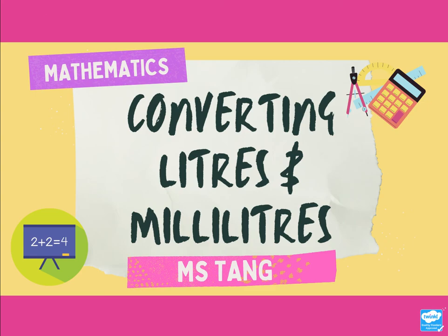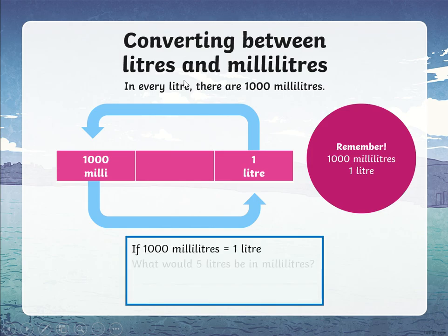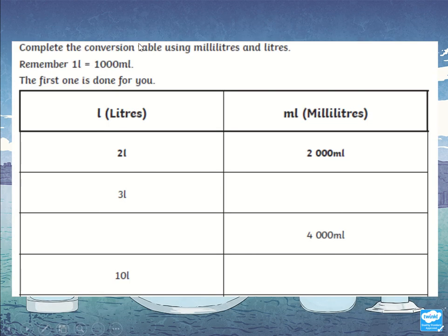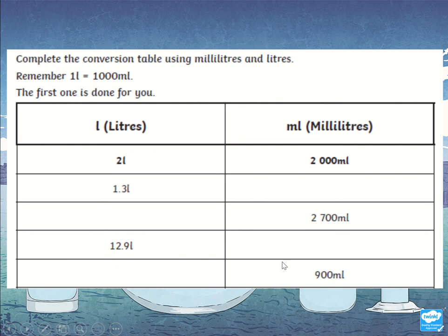Now let's look at some activities. This is a Level 1 — give it a go. The first one's already done for you: 2 liters equals 2,000 milliliters. Now see if you can do 3 liters — how many milliliters? Then 4,000 milliliters — how many liters? And 10 liters — how many milliliters?